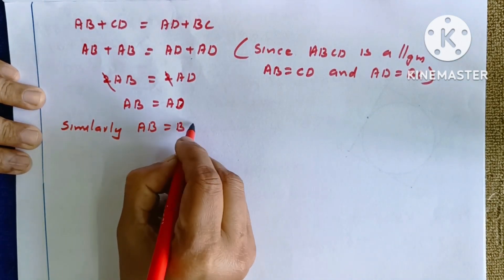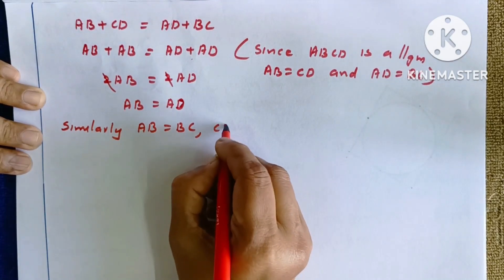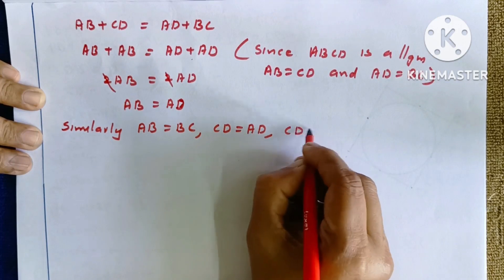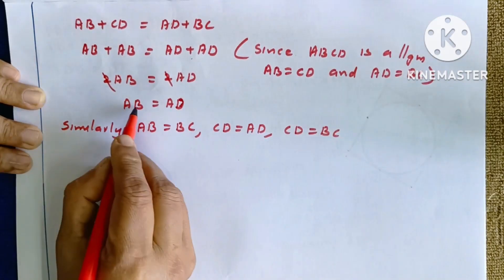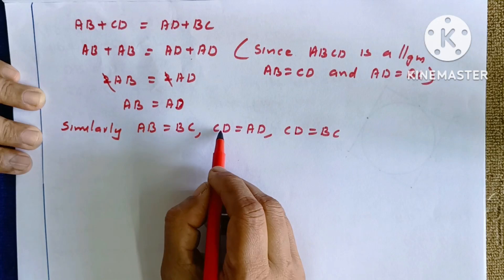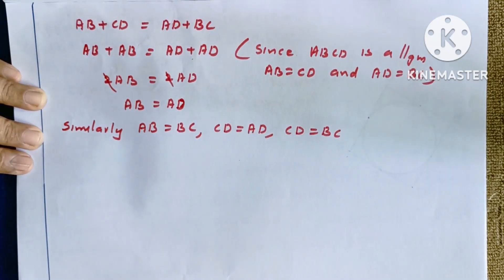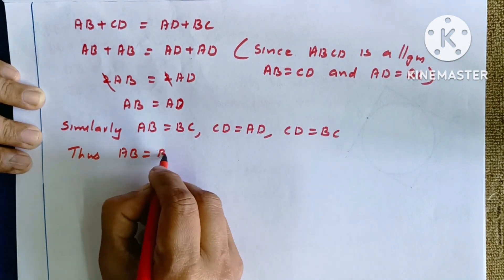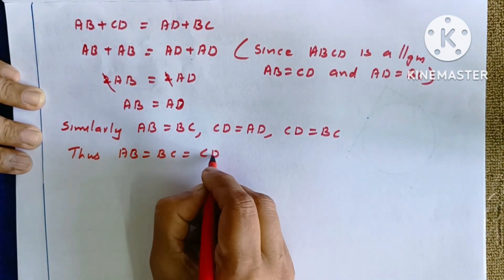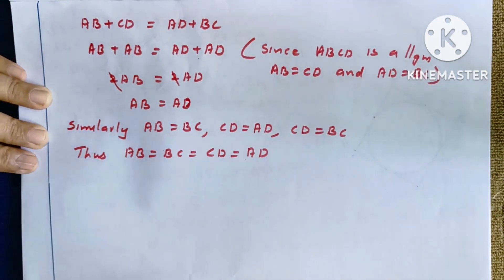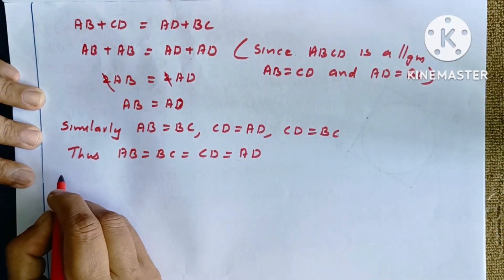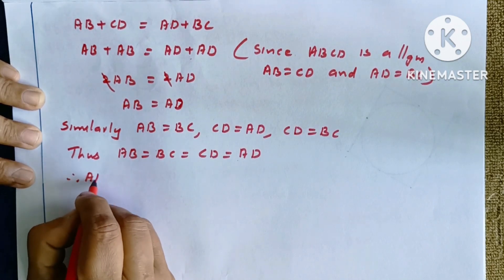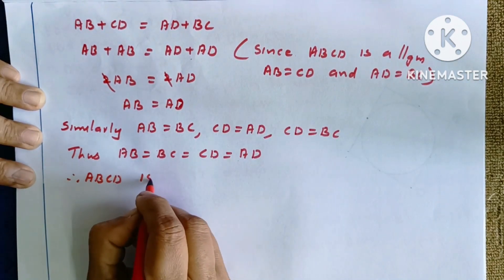Therefore AB equals BC equals CD equals AD — all four sides are equal. Hence ABCD is a rhombus. Therefore, a parallelogram circumscribing a circle is a rhombus.